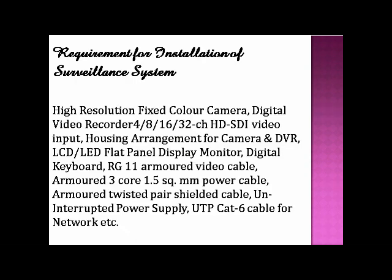Requirements for installation of a surveillance system include: high resolution fixed color camera, digital video recorder in 4, 8, 16, or 32 channel HD-STI video input housing, arrangement for camera and DVR, LCD or LED flat panel display monitor, digital keyboard, RG11 armored video cable, armored 3-core 1.5mm power cable, armored twisted pair shielded cable, uninterrupted power supply, and UTP Cat-6 cable for network.